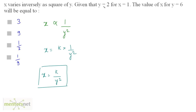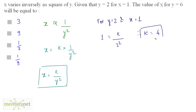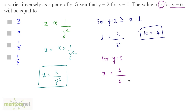When we put y equal to 2 and x equal to 1 into the equation, we get 1 equals k by 2 squared, therefore k equals 4. Now, for y equal to 6, we have x equals 4 by y squared, so x equals 4 by 6 squared, which is 4 by 36, giving x equal to 1 by 9.